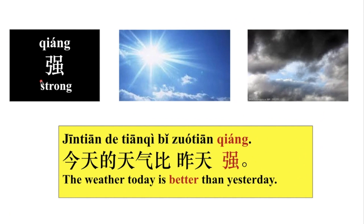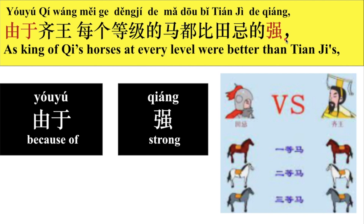我们来看一个例子，强。今天的天气比昨天强，那在这里呢，这个强就是好的意思，今天的天气比昨天好。由于骑王每个等级的马都比田纪的强，三场比下来，田纪都失败了。